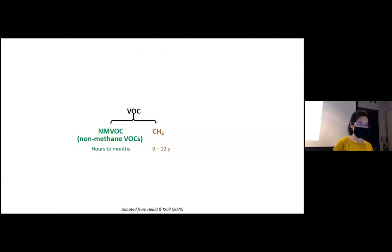VOC includes non-methane VOC and methane. The two components are often discussed separately due to their contrasting lifetimes, which is hours to months for NMVOC and 9 to 12 years for methane. Nevertheless, their roles in atmospheric chemistry are closely connected, as both are primarily removed by OH radicals in the atmosphere. Therefore, the change in abundance in each of them would cause a suppression or enhancement of OH radicals, therefore modulating the lifetime of the other.